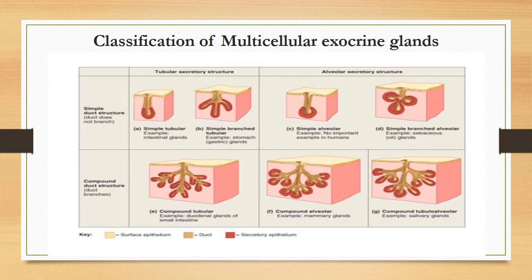In compound types of glands, the duct is branching. The acini or parenchyma can be tube-like, alveolar-like, or both — when both occur in the same gland, we call it a compound tubulo-alveolar gland, for example the salivary glands. Compound alveolar glands include the mammary glands, and compound tubular glands include the duodenal glands, or Brunner's glands, the best example of compound tubular glands.